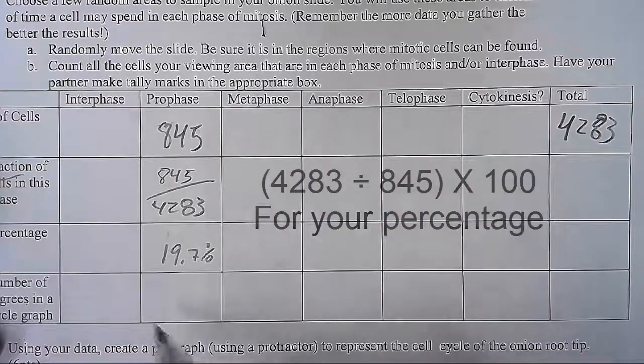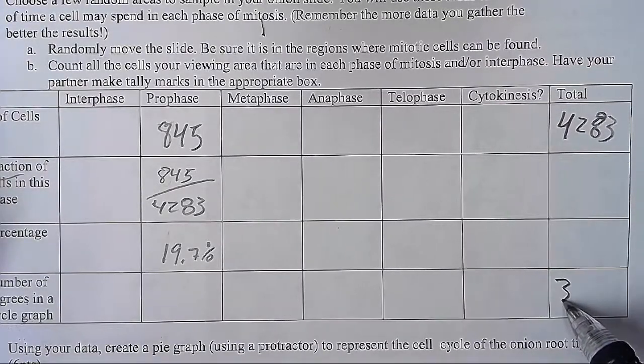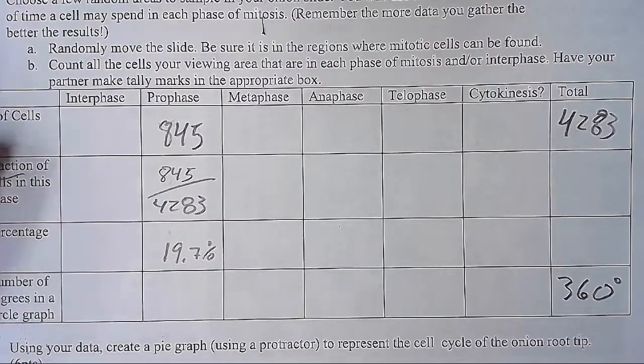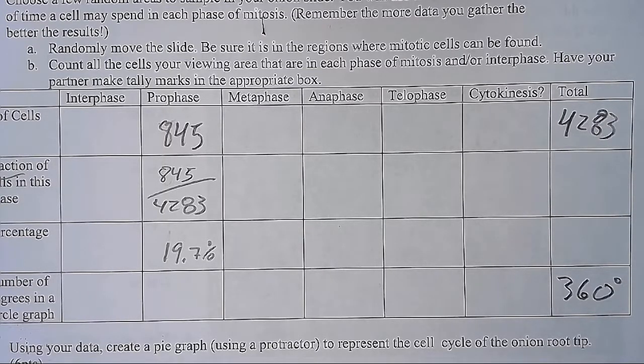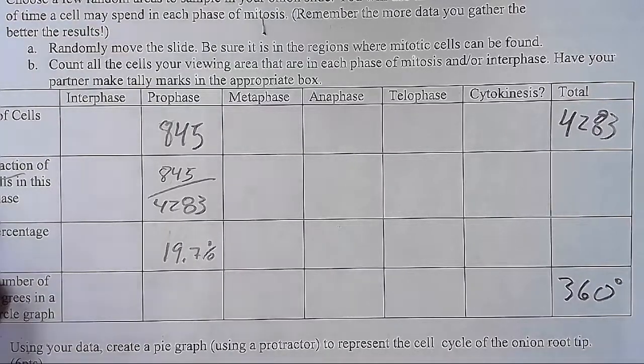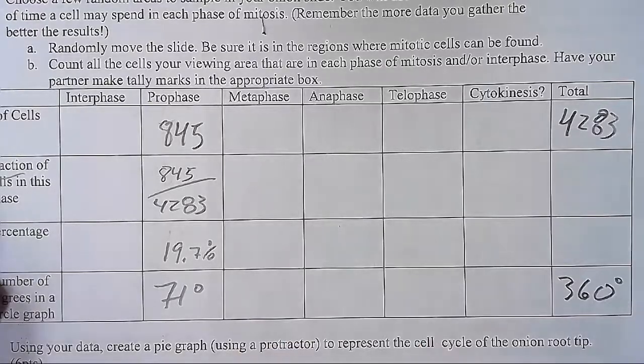This is where it gets exciting. You must remember, young Padawan, that there are 360 degrees total in a circle. And then you do my favorite game, mathematics. You just take your 19%, multiply it by 360 degrees in a circle, and so for prophase, that chunk of the pie chart out of 360 degrees for a full circle, that should be 71 degrees.